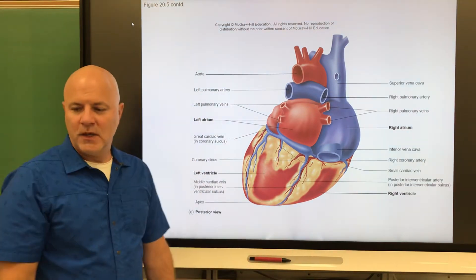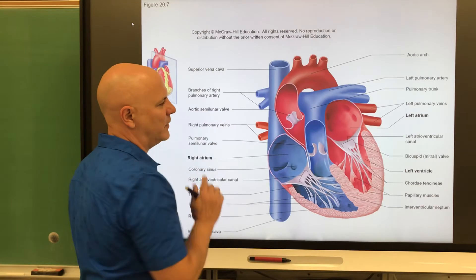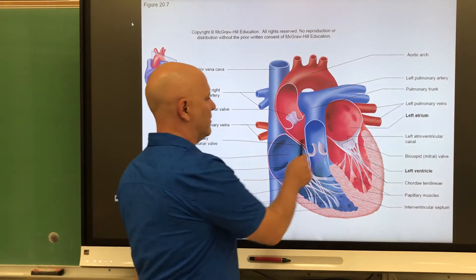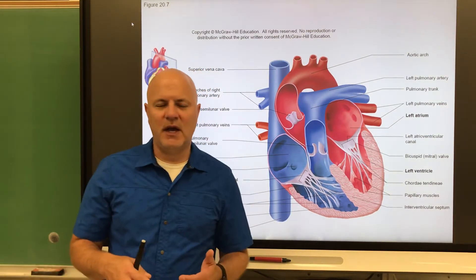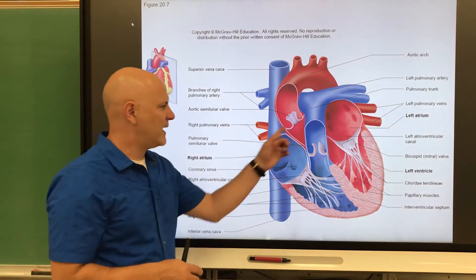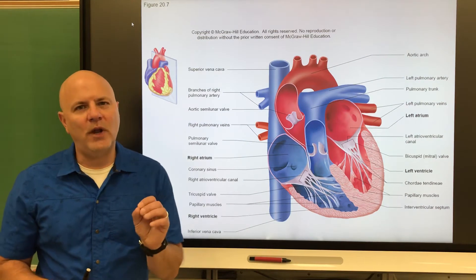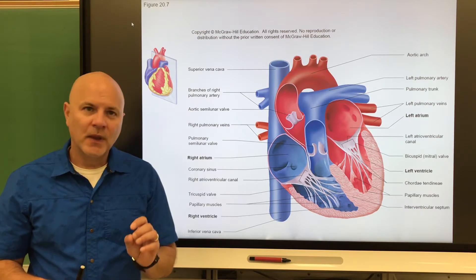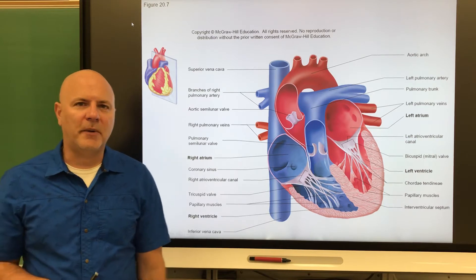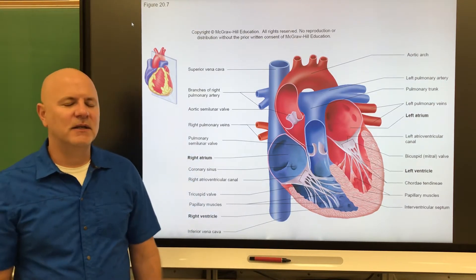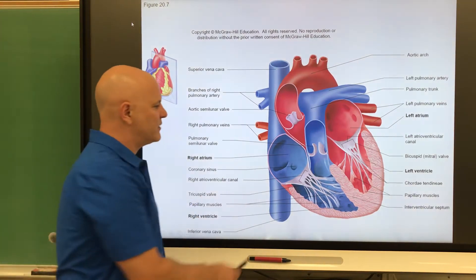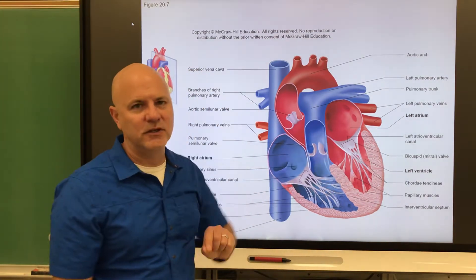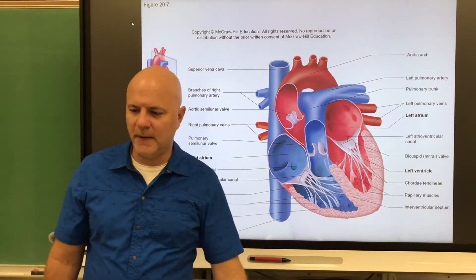The upper chambers are the atria and the lower chambers are the ventricles. The two upper chambers — the atria — are chambers that receive blood returning to the heart. They are divided by the interatrial septum. When we are a fetus, there is a small hole there called the foramen ovale, which closes a couple of months after birth, leaving behind a remnant called the fossa ovalis. The atria are thin-walled chambers because they only need to push blood down into the ventricles.